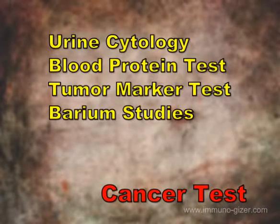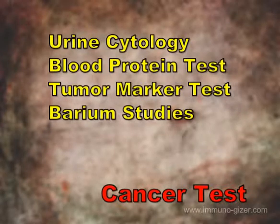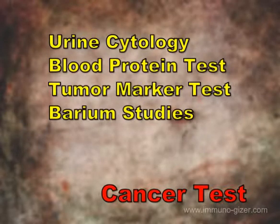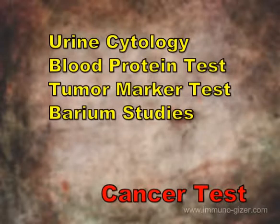Barium studies: you have this type of test if your doctor needs to look at the outline of any part of your digestive system. A barium study is most often used to look at the inside of the oesophagus or stomach. A barium enema looks at the colon and rectum.